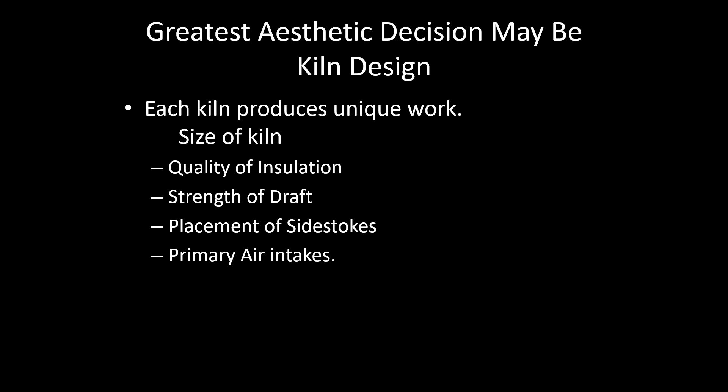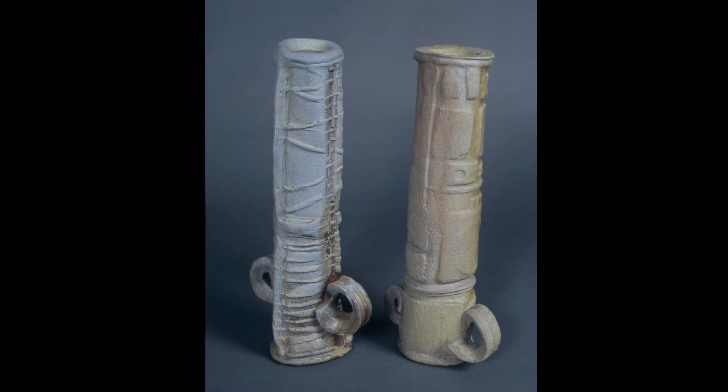How well insulated is your kiln will determine a great deal about how it fires. What's the strength of your draft? How tall is your chimney? The placement of the side stokes — how many and where are they in the kiln? How many primary air intakes are there, and how well can you control secondary air? Here are two pieces made from the same clay, virtually the same shape, fired at the same time — one in the front chamber of the dancing fire kiln and one in the back chamber — and you can see quite clearly that kiln design does have a major effect.